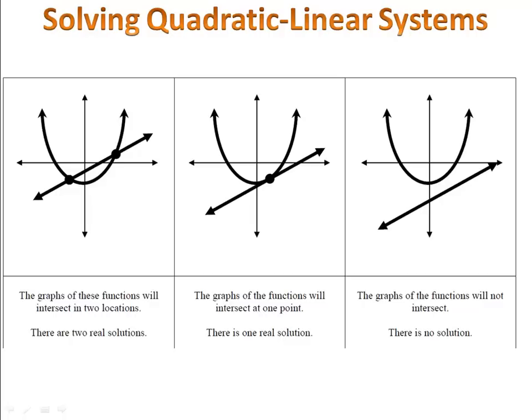We know that we can have three possible outcomes. The first is that the line and parabola intersect in two different points, meaning we have two solutions. Or, the line and the parabola can meet at one point and we have one solution. Finally, we could have two graphs that don't intersect at all, meaning there is no solution to the system of equations.